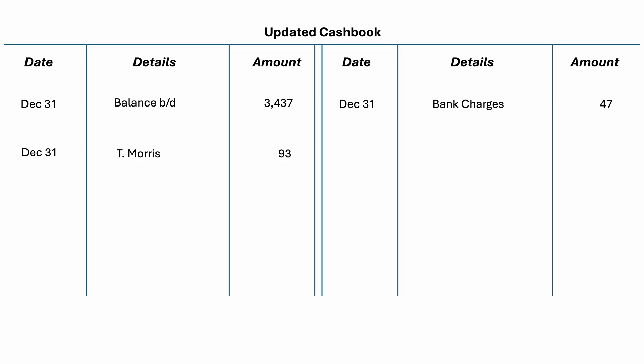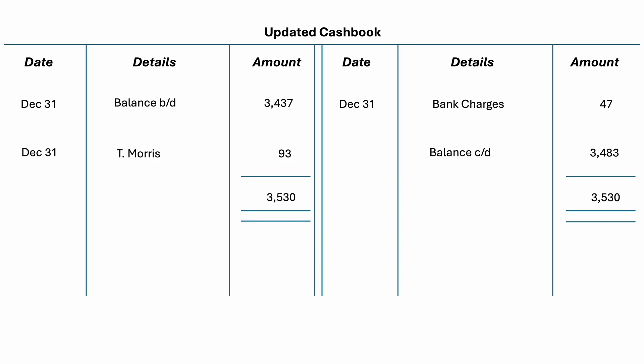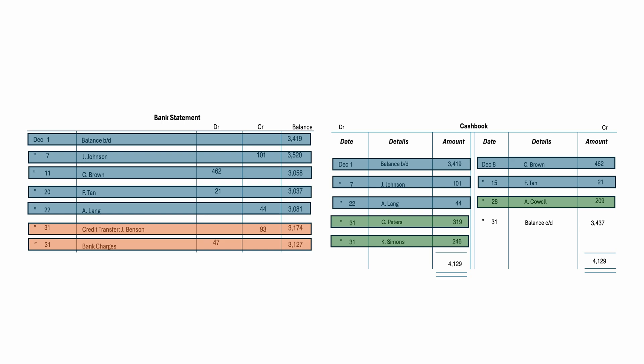Now we can balance the updated cash book. The balance carried down is $3,483. The next step is to create a bank reconciliation statement. Looking back at the original cash book, the items highlighted in green were recorded in the cash book but not on the bank statement. Those on the debit side are outstanding deposits — payments made by debtors not yet reflected in the bank account. The item on the credit side is an unpresented check, as a payment was made to a creditor but not yet processed by the bank.